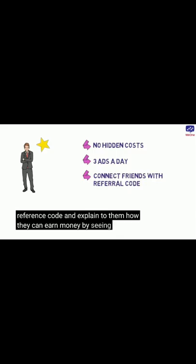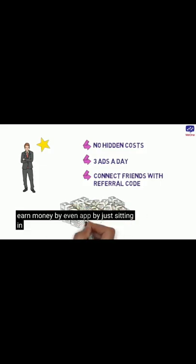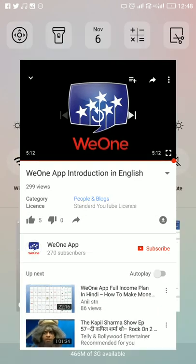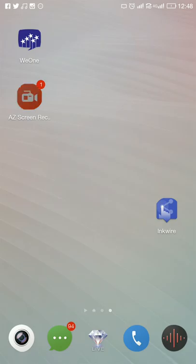You might be curious to know where V1 gets its money — V1 gets money from advertisers in a regular and legal way, and this money is distributed to the users. Just download V1 app, watch three ads a day, connect your friends with your referral code, and explain to them how they can earn money. There are no hidden costs. You can earn money with V1 app just sitting in the comfort of your home.